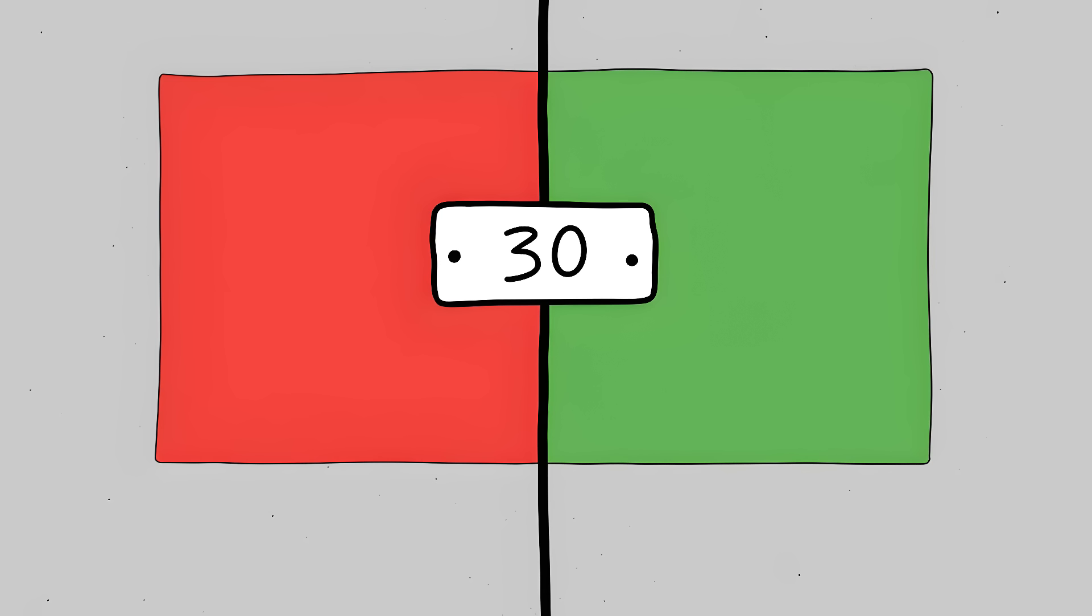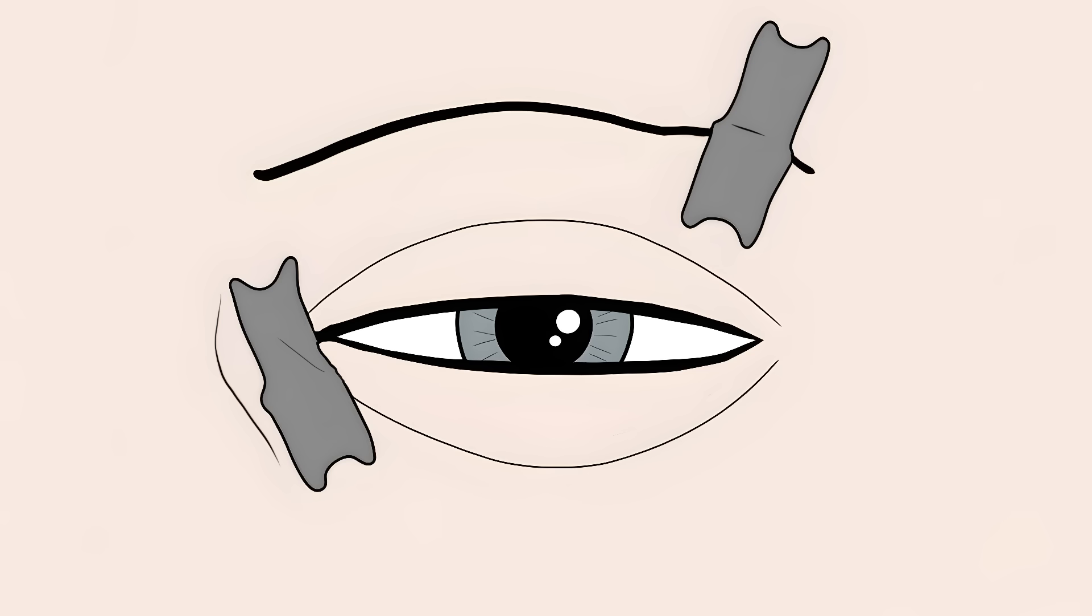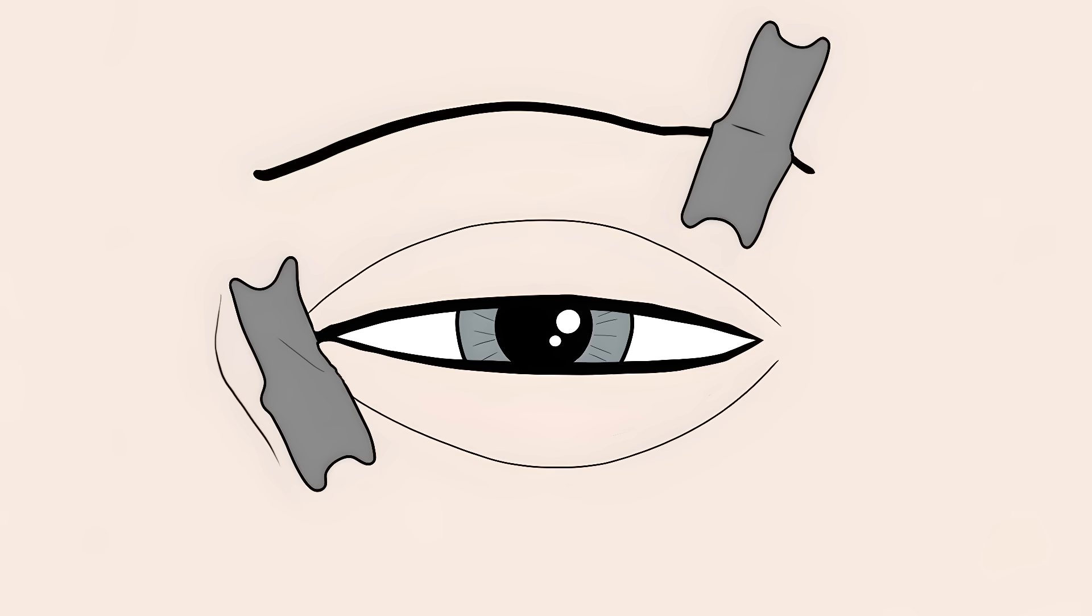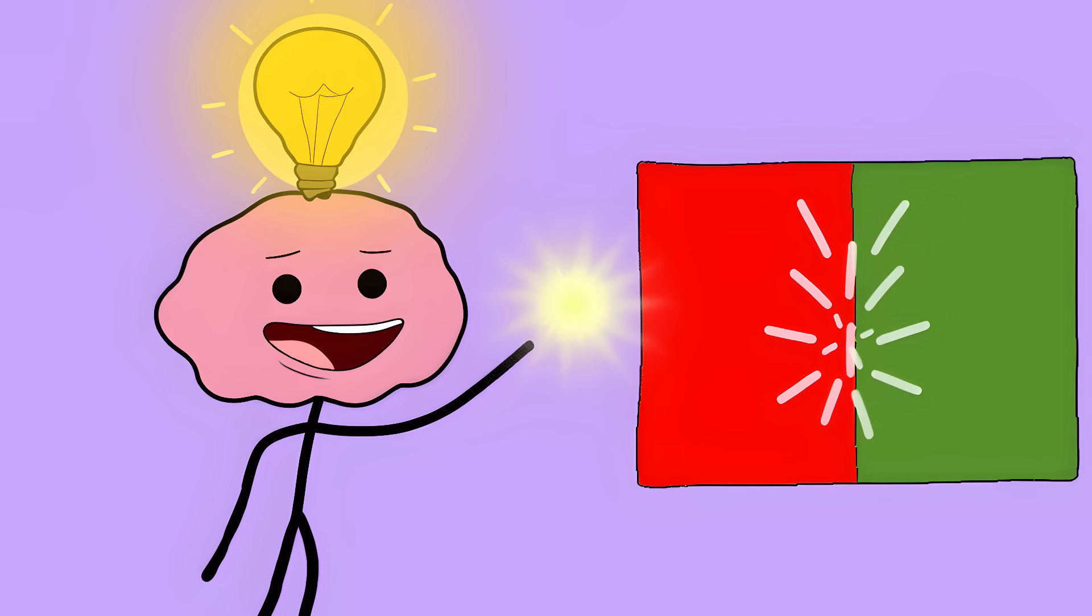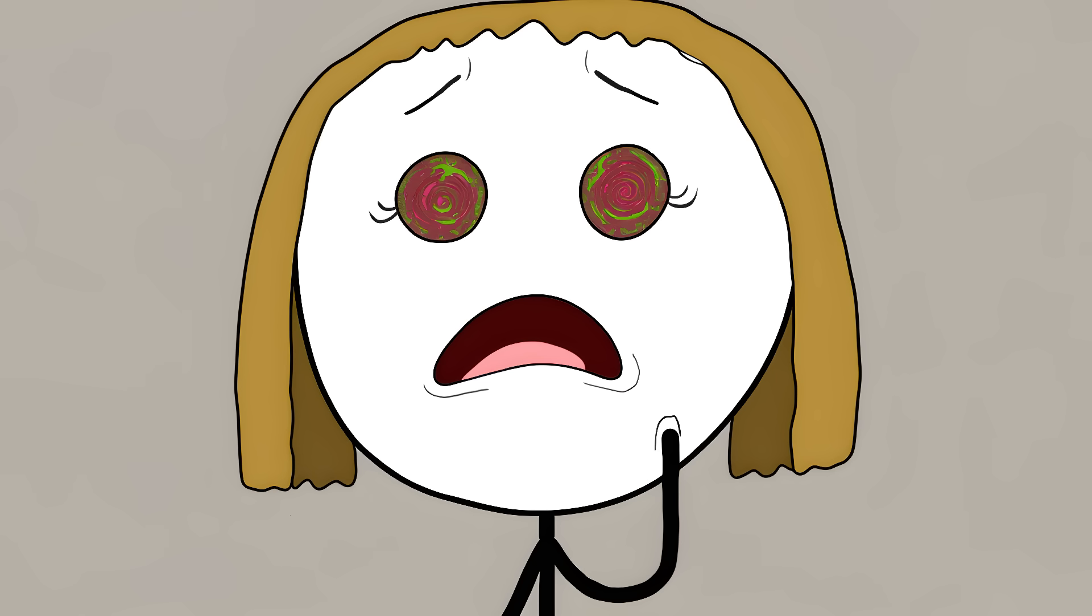You can force your brain to see these forbidden colors. Find a picture with a red square touching a green square. Stare at the exact line where they meet, don't blink or move your eyes. Just stare at that dividing line for 30 seconds. Your eye cells that see red and green start getting tired. After 30 seconds, relax your eyes for just a moment. The boundary between red and green dissolves, and your brain creates a new color in that space.